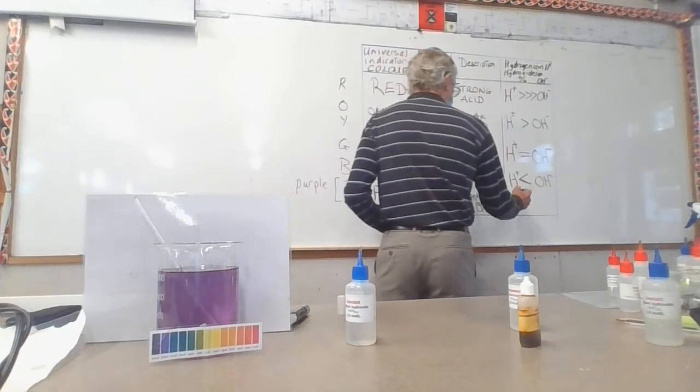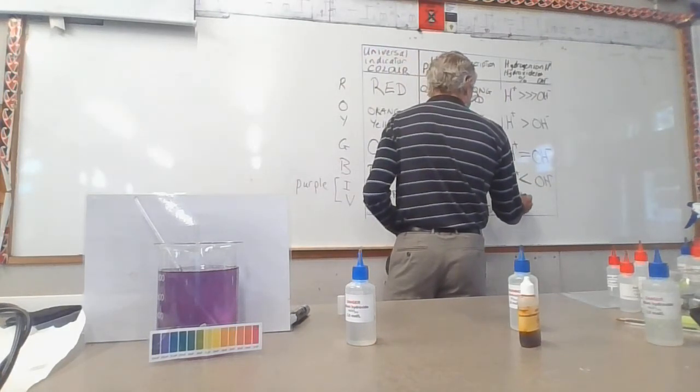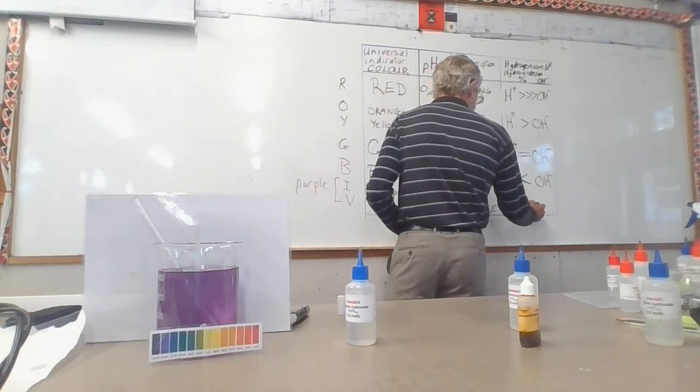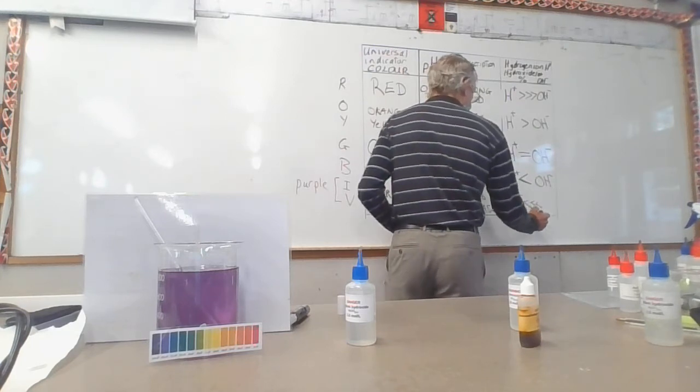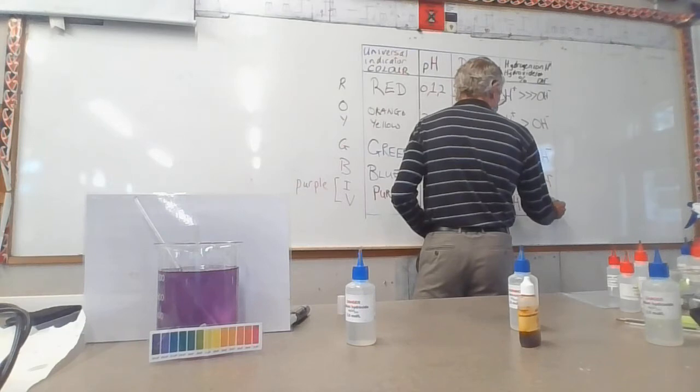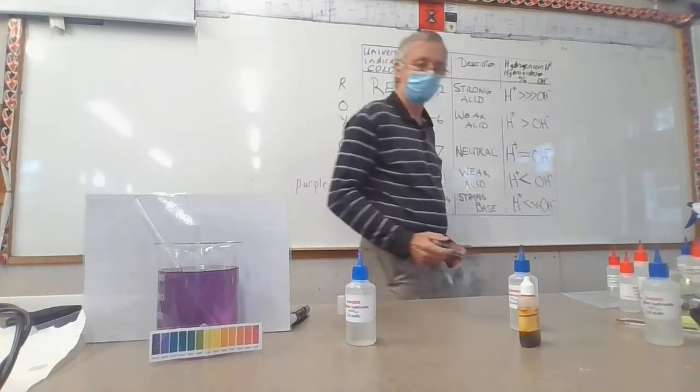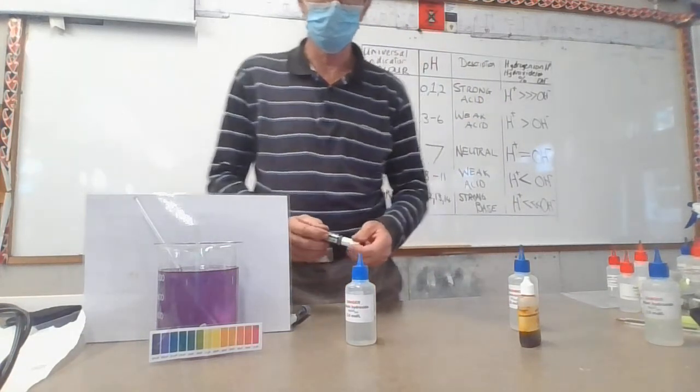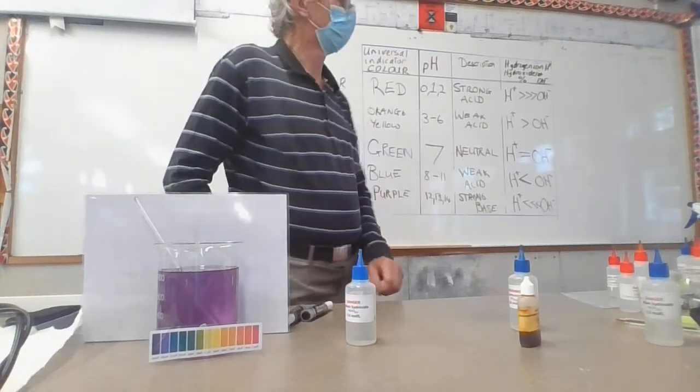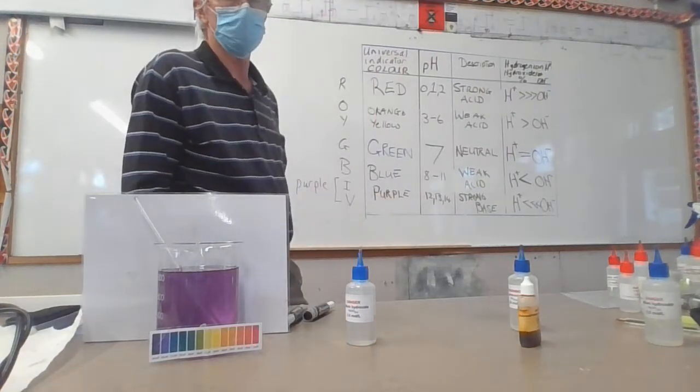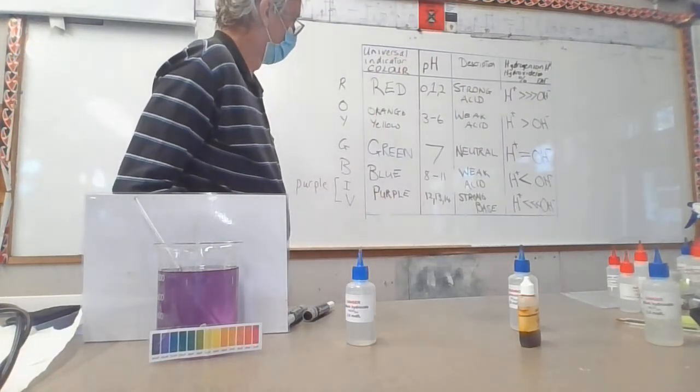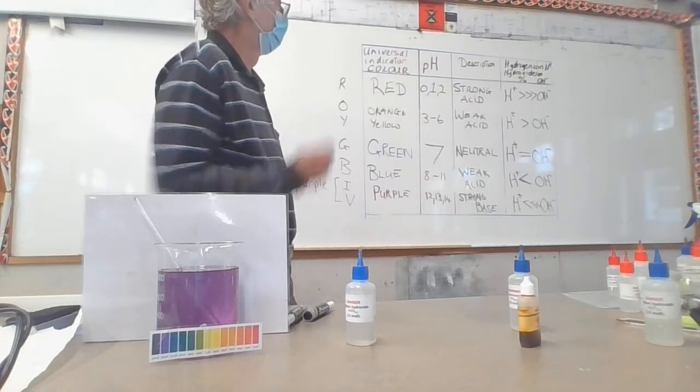Over here we have that the hydrogen ions are now a tiny amount and the hydroxide ions, their concentration or percent, is a billion times bigger than the hydrogen ion, making it a strong alkaline.